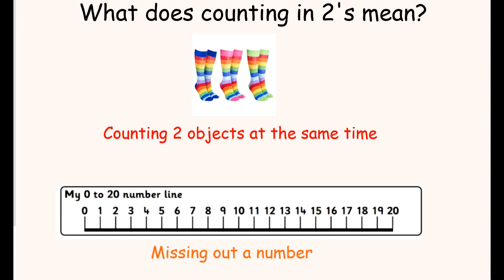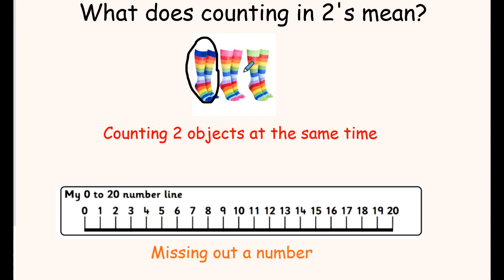So what does counting in twos actually mean? Counting in twos is when we're counting two objects at the same time. We're counting a pair together — one pair, two pair, three pair — but each pair means two. So that means we have to do two, four, six.